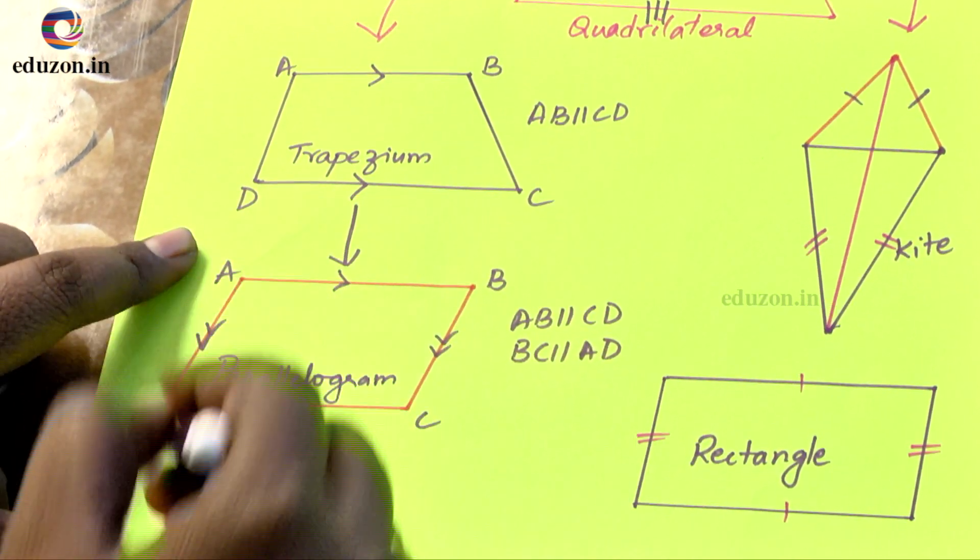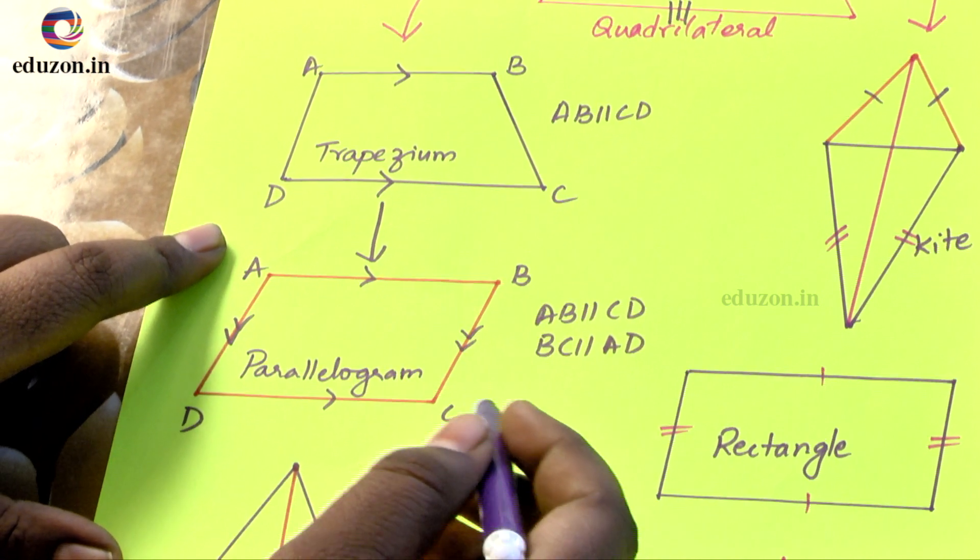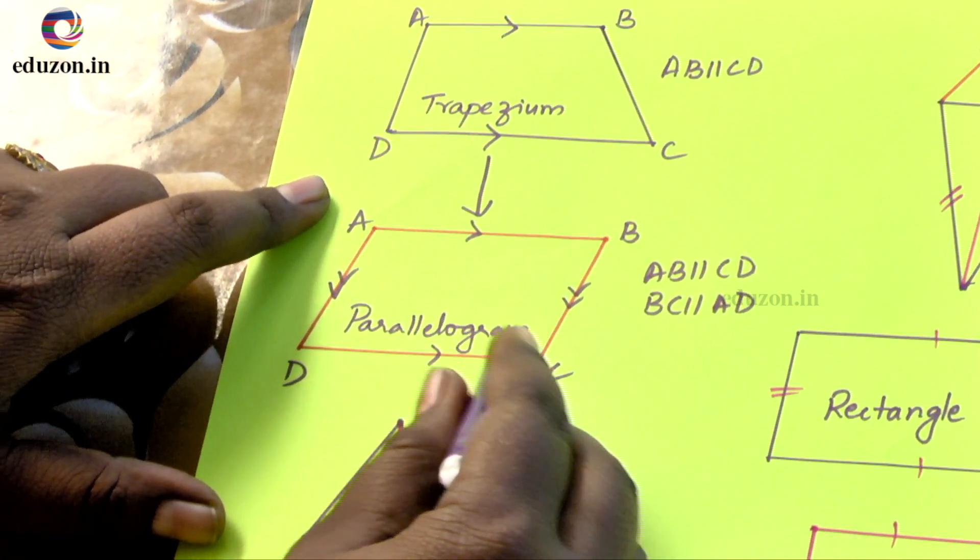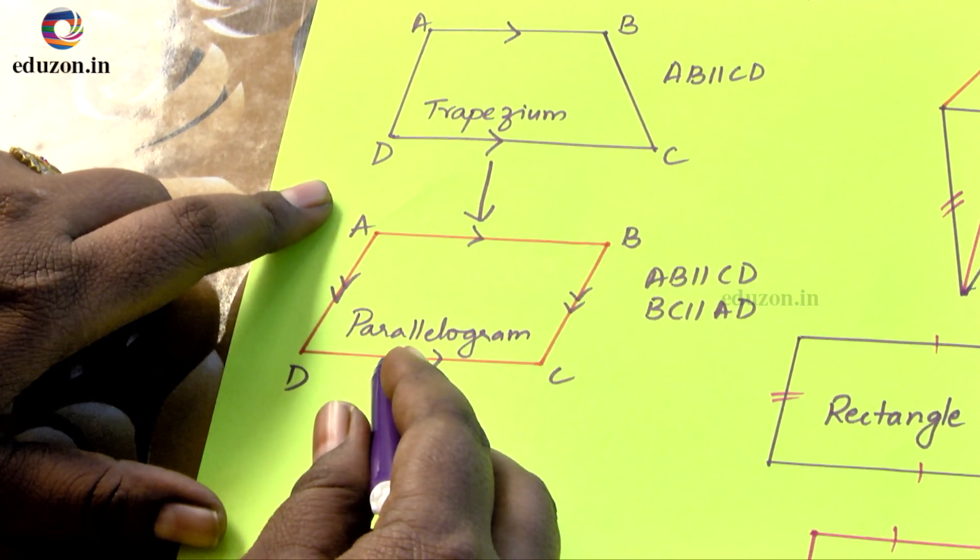So here both opposite pairs are parallel to each other. So in such case we call it as parallelogram. So the quadrilateral is called as parallelogram.